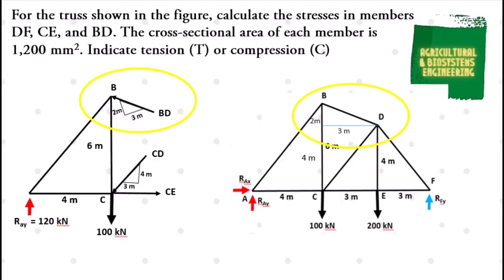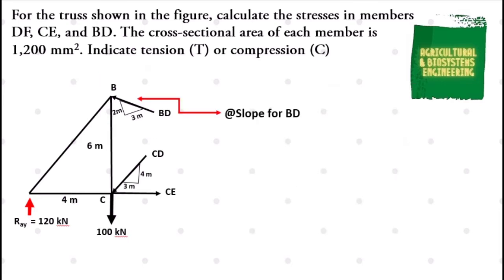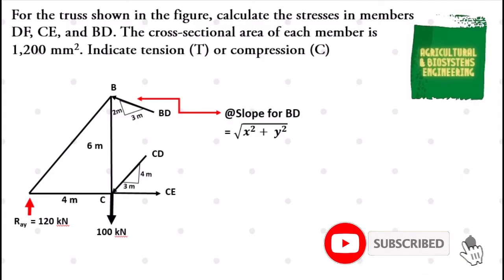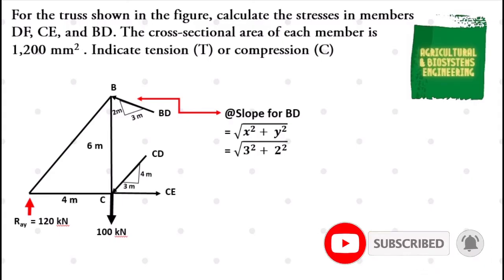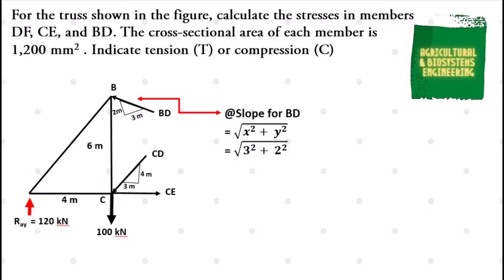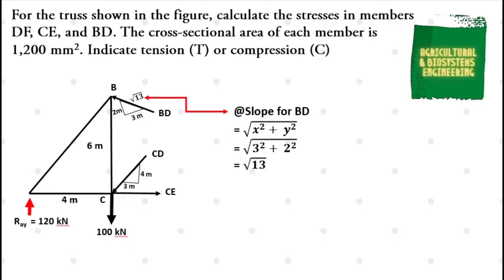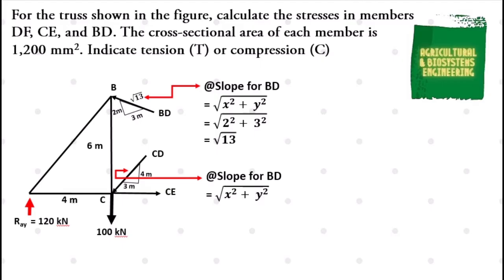To solve for the hypotenuse of the slope at BD, we use the Pythagorean theorem: hypotenuse equals the square root of x² plus y². With x = 3 (horizontal) and y = 2 (vertical), we get the square root of 3² + 2² = √13. For member CD, the hypotenuse equals the square root of 3² + 4² = 5.